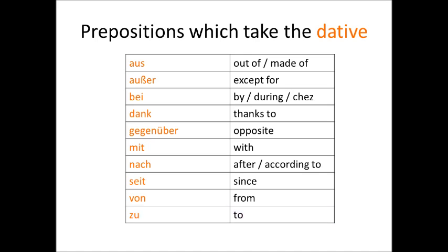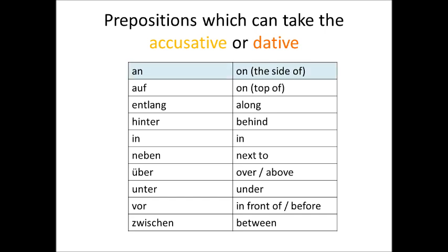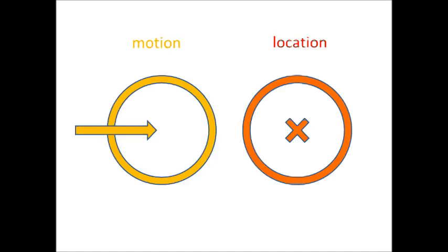There are also a number of prepositions which can take either the accusative or the dative. These are: an, which means on as in on the side of; auf, which means on as in on top of; entlang, which means along; hinter, which means behind; in, which means in; neben, which means next to; über, which means over or above; unter, which means under; vor, which means in front of or before; and zwischen, which means between. As I said last time, the difference between whether these take the accusative or the dative depends on whether they are expressing motion or location, and I'll talk more about that in my episode on prepositions.